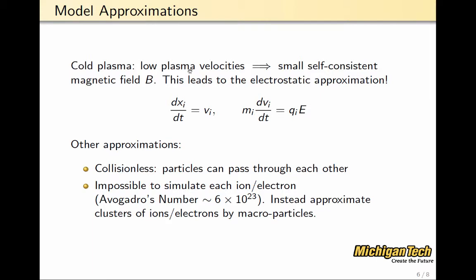or they have very little kinetic energy, which translates to low plasma velocities. Because of these low velocities, you can imagine that the current generated by the moving chargers are really small. So, we have small magnetic field. So, if the velocity is small, that means that magnetic field is small, v cross b is small.